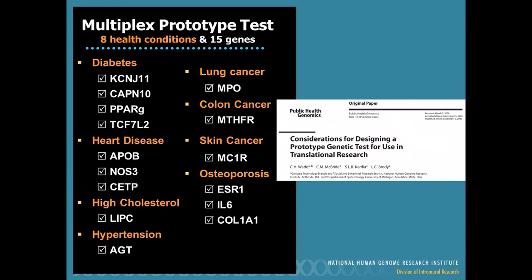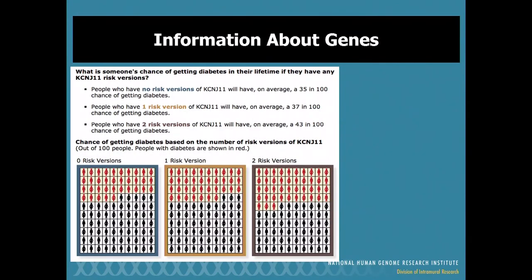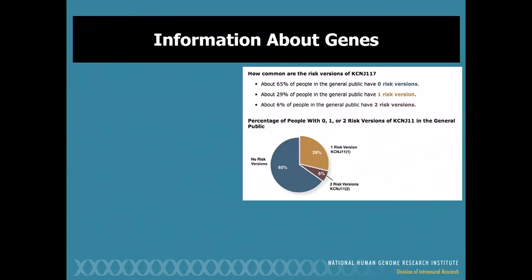The Multiplex Initiative developed a prototype genetic susceptibility test. We brought in experts to guide us and identified eight common health conditions and 15 genes that, around 2005–2006, had the evidence base to be included. We used evidence-based approaches for risk communication. The materials showed individuals what their risk would be in each category — for example, with the KCNJ11 gene, there are three possible risk versions, with only about a six-in-a-hundred difference in risk between having no variants and three variants. We also told participants how common it was to fall into each category to help ground their personal risk assessments.